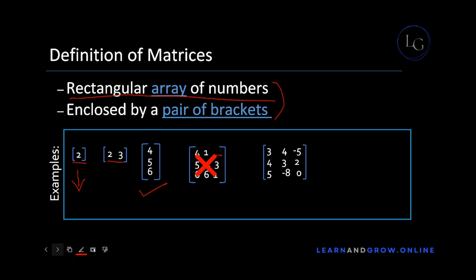In this next example we will see what rows and columns are in a matrix. These horizontal lines are denoted by M and are called rows — over here we have three rows. In the same way, these vertical lines are denoted by N and are called columns. In this example we have three columns.